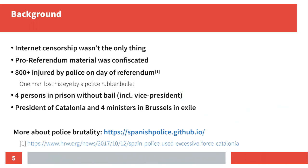In this talk I'll focus on internet censorship, but there were also other things happening in the weeks before and after the referendum. Pro-referendum material was confiscated by the police. We had over 800 injured people by the police on the day of the referendum, when the police tried to shut down polling stations. One man lost his eye by a police rubber bullet. Notably, Catalan police forces are not allowed to use rubber bullets against protesters, but Spanish police officers are allowed to do so in Catalonia.